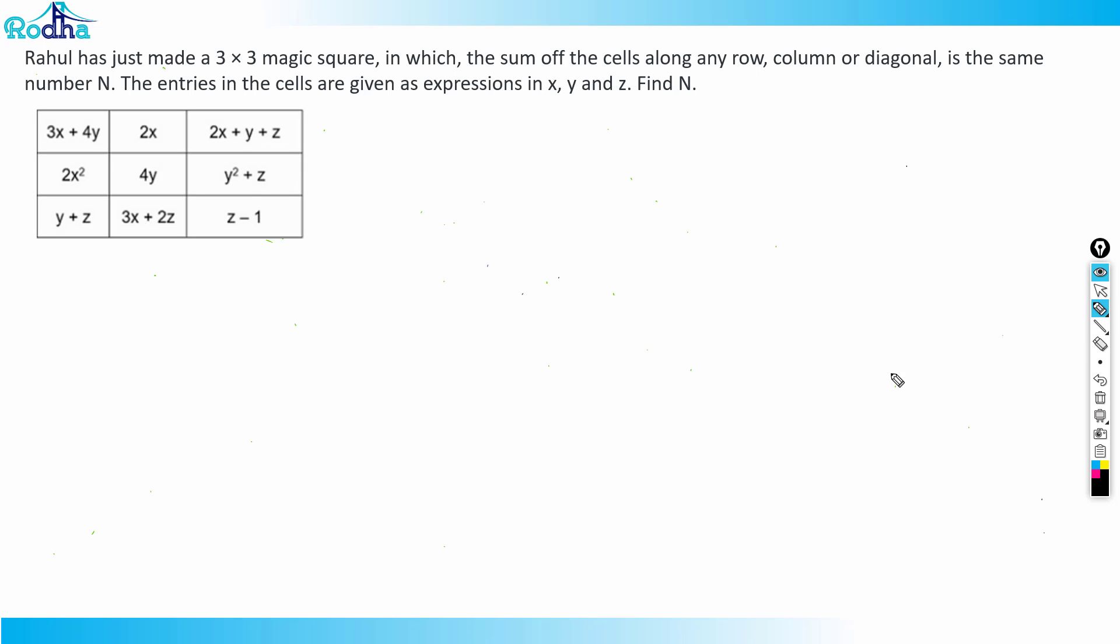Let's look at this question guys. This is a question from Z2021. This question says that Rahul has just made a 3 x 3 magic square in which the sum of the cells along any row, column or diagonal is the same number n. The entries in the cells are given as expressions in x, y and z. Find n.